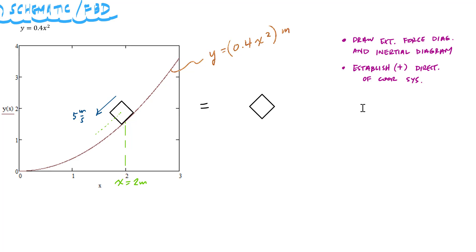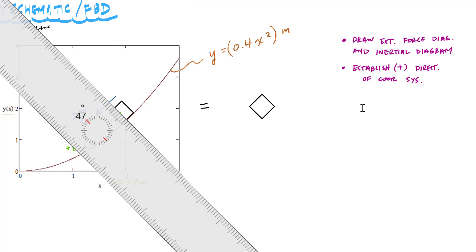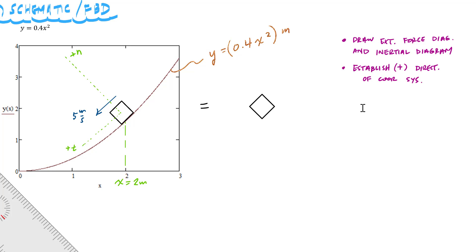My tangential component is parallel to the velocity vector at this instant, so this will be my plus T direction. My normal direction is 90 degrees to that tangential component, towards the center of curvature — this will be my plus N direction. I'll draw the exact same coordinate systems on my inertial diagram in the tangential and normal directions: plus N, plus T.